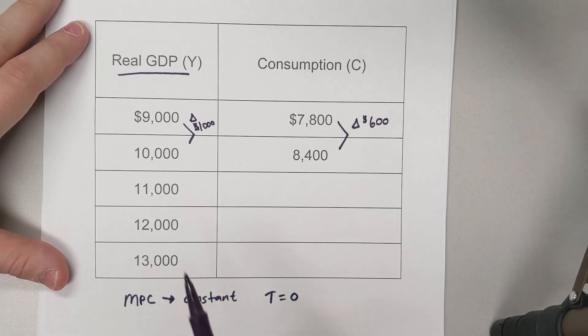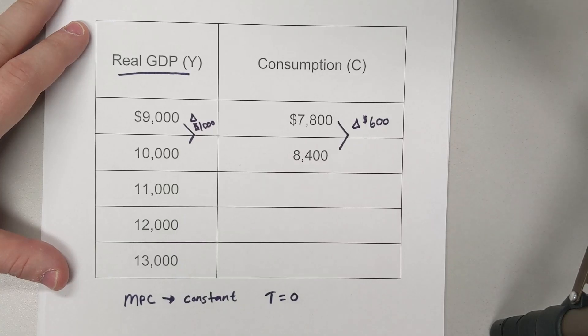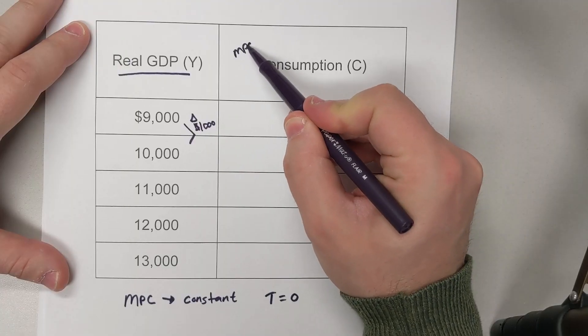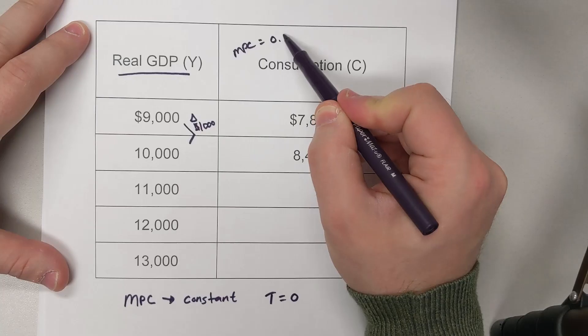If it's constant, that means every time GDP changes by $1,000, consumption will change by $600, meaning the MPC is 0.6.